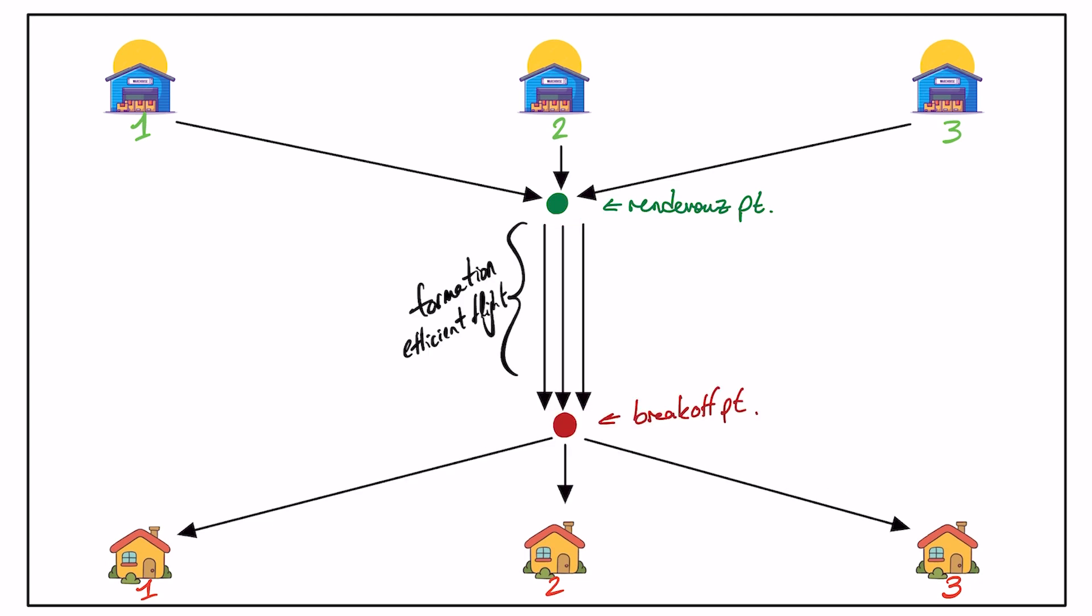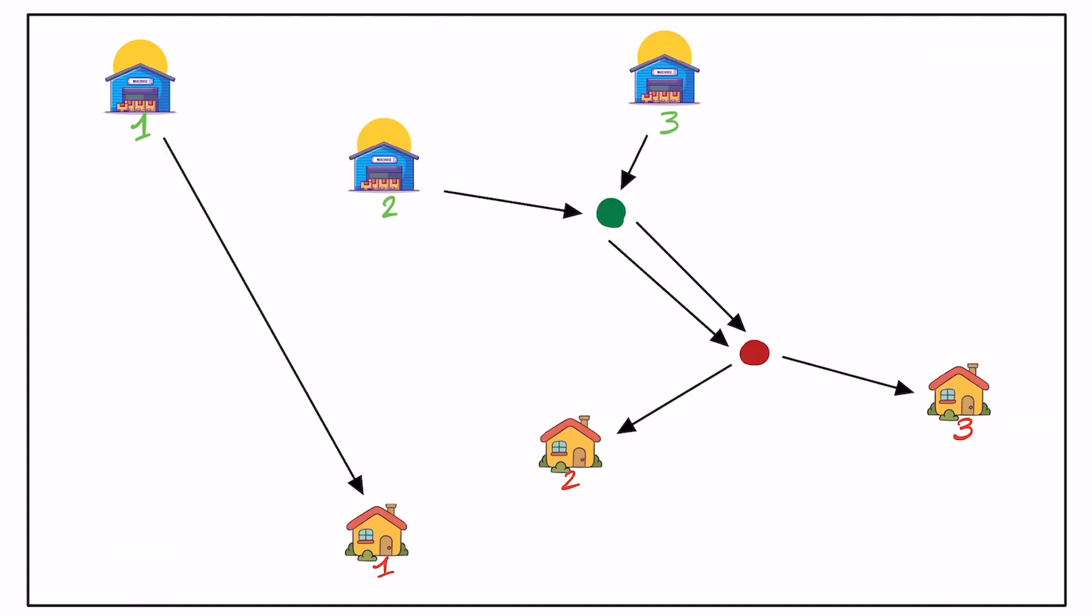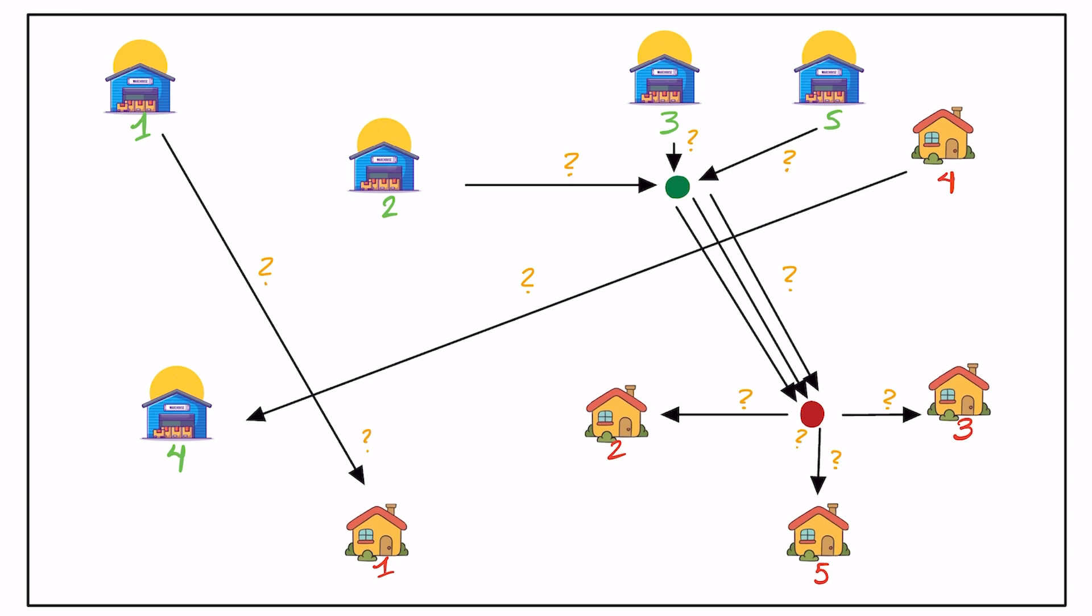But a good question is, where do the vehicles connect, and should they connect, and where do they break off? Because for drones 1 and 3, they must fly a greater total distance as a result of joining together. But what if the start and goal points aren't so simple, and we have multiple warehouses and drones?